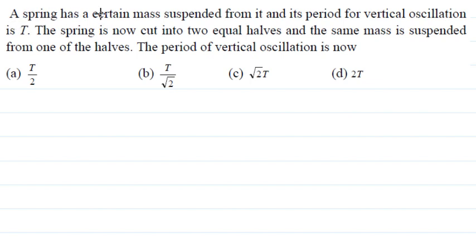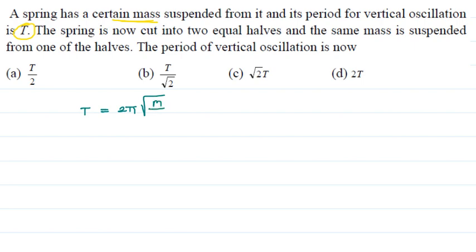Third question: a spring has a certain mass suspended from it and its period of vertical oscillation is T. The spring is now cut into two equal halves and the same mass is suspended from one of the halves. The time period of vertical oscillation is T equals 2π under root of m upon k.